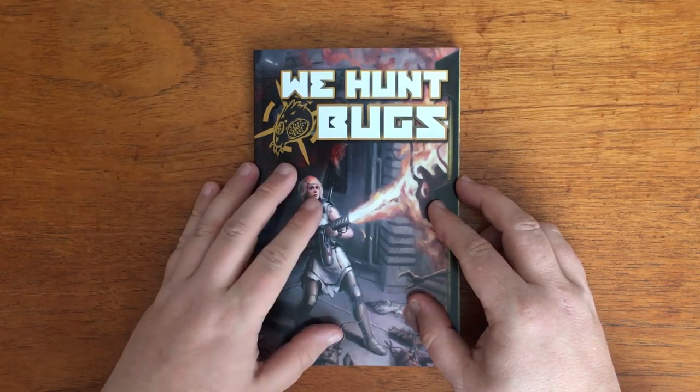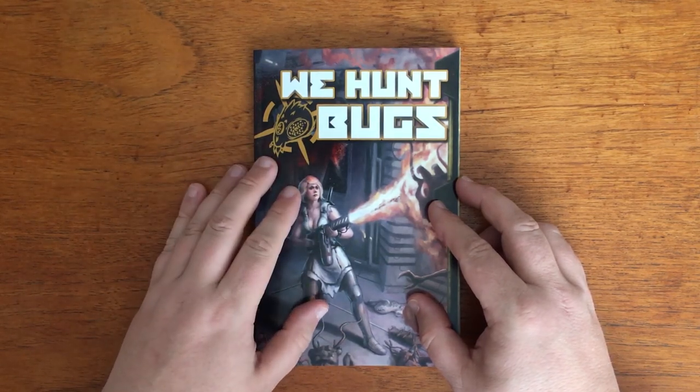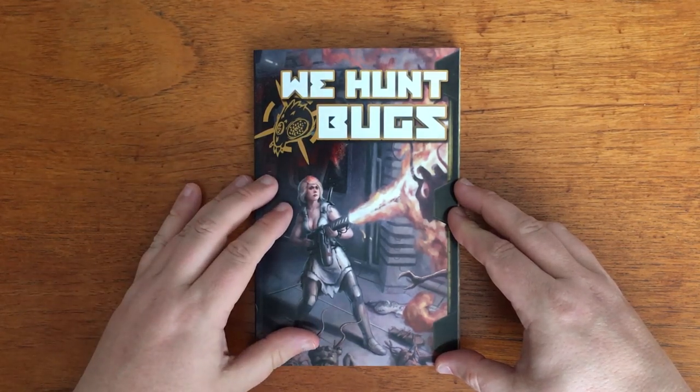It has a simple rule system that requires a character sheet, a pencil and 8D6. Right, to the cover. Here we have a piece by Jeff Porter. Although quite basic looking, it does a decent job of showing what the game is about.